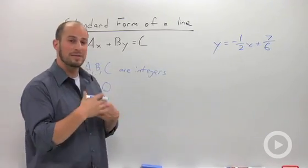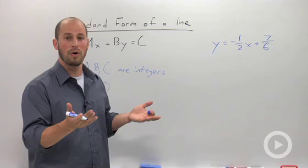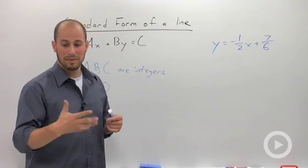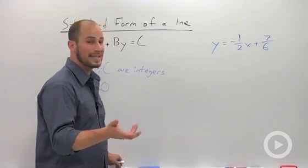So what we have to do is we first have to make all our coefficients whole numbers. So we need to get rid of all of our fractions, and the way we do that is by multiplying by our least common denominator. So in this case our least common denominator is six.